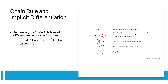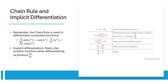The chain rule is used when one function is nested inside another, allowing us to take derivatives of complex composite functions. Implicit differentiation is necessary when y cannot be easily isolated. Differentiate both sides of the equation with respect to x, treating y as a function of x, and then solve for dy/dx.